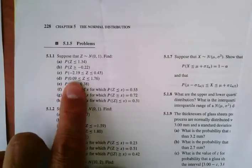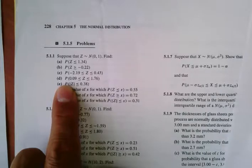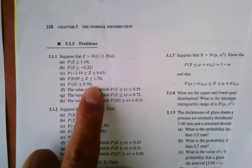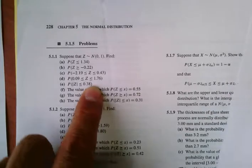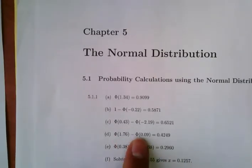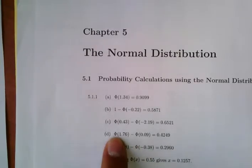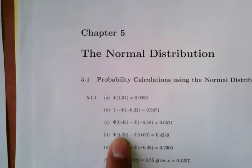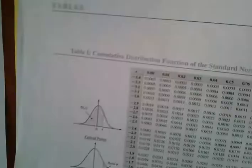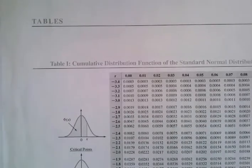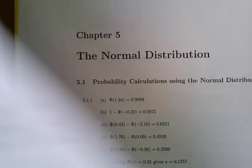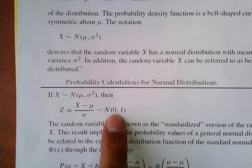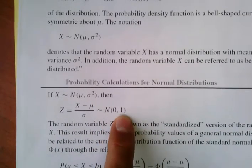For question D, we also have an interval, so we perform another subtraction of the corresponding phi function values. These phi functions are obtained from the table on page 787, which is the standard normal table and only applies when mu equals 0 and sigma equals 1.